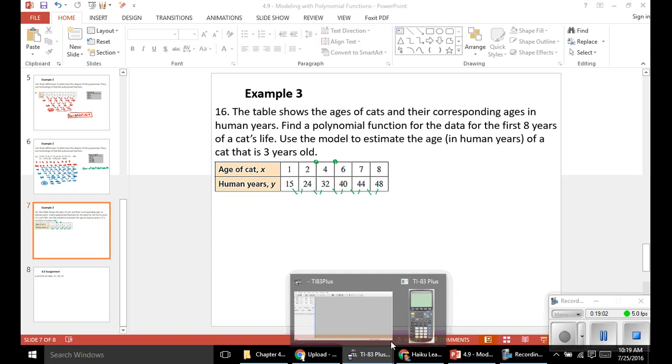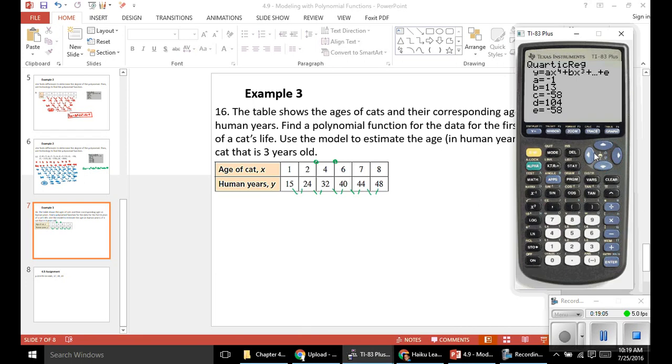If we pull up the calculator, clear out the screen, go back to our stat menu, and edit those lists. Let's clear out those lists. And for list one, my X values, I've got 1, 2, 4, 6, 7, and 8. For the Y values, I've got 15, 24, 32, 40, 44, and 48.